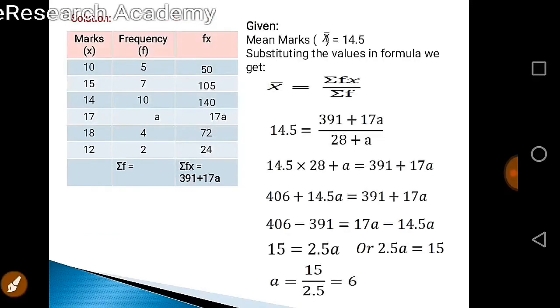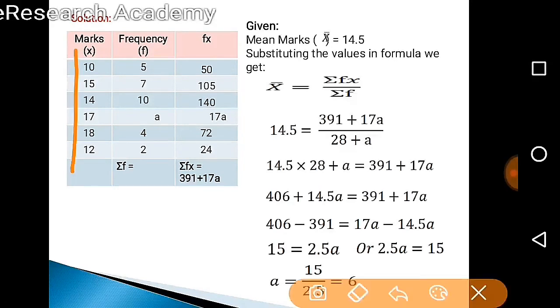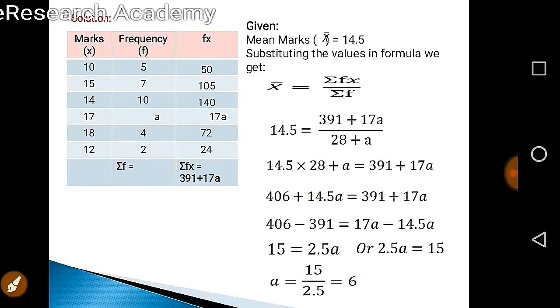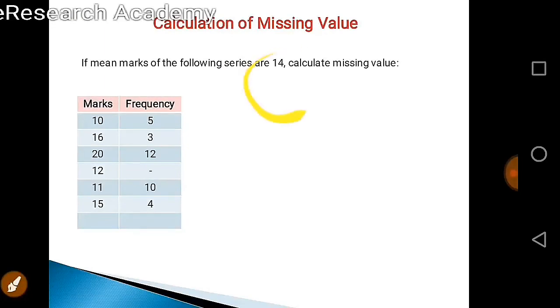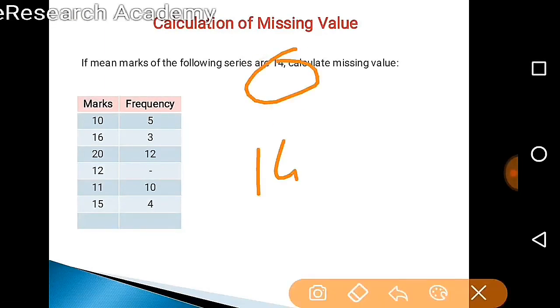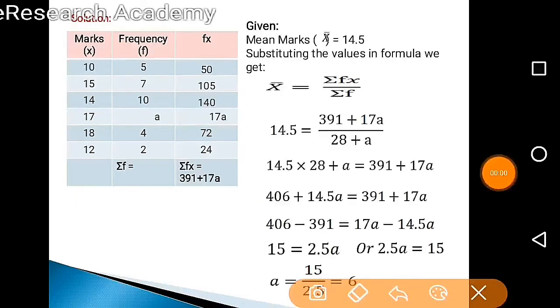Let us solve this one. We are having x and their corresponding frequency but one frequency is missing that I am treating as A. The formula that we are having here is sigma Fx upon sigma F, for this purpose we are given mean marks 14.5. Please correct here, it is 14.5, not 14.